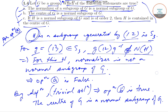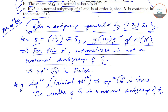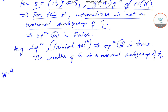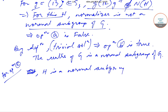Now for Option C: if H is a normal subgroup of G and is of order 2, then H is contained in the center of G. We proceed with this option. Since H is a normal subgroup of G with order equal to 2, we can write H = {e, a}.